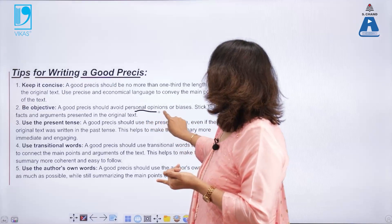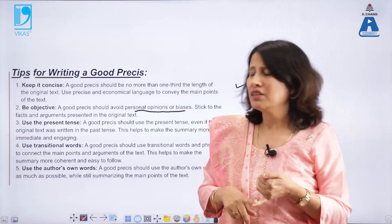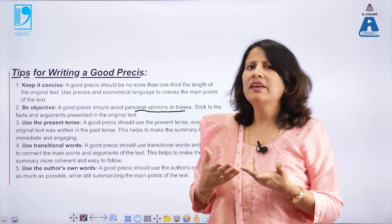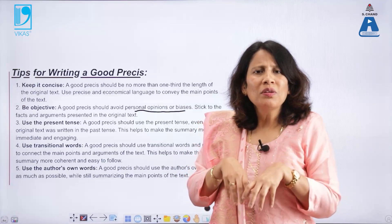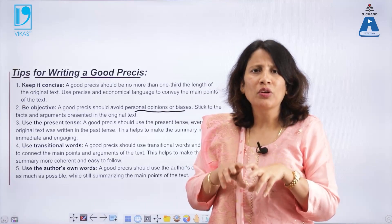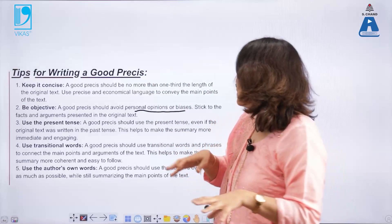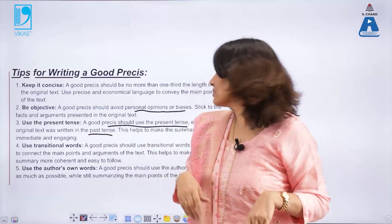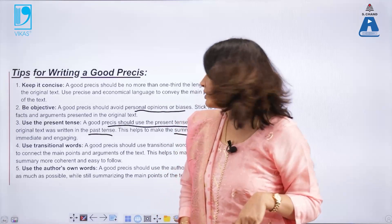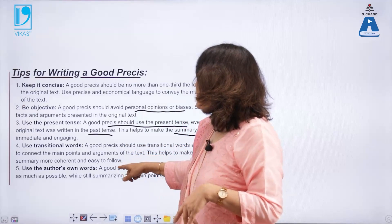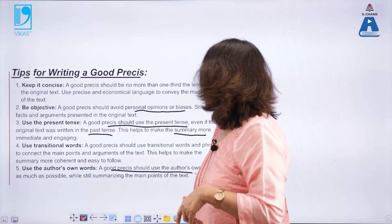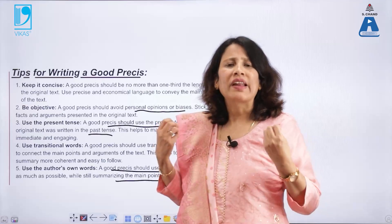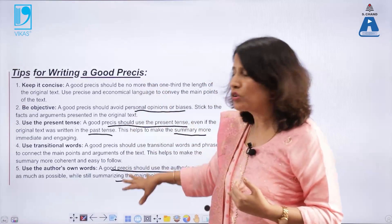Be objective — avoid personal biases. For example, if you are writing a Précis on anti-CAA protests, your own biases and opinions will not matter. It is all about what you read in the original text and how you summarize it. Use the present tense, even if the original text was written in the past tense — this helps make the summary more immediate and engaging. Use transitional words and use the author's own words as much as possible while summarizing the main points of the text, so that readers can see you have read the original carefully.